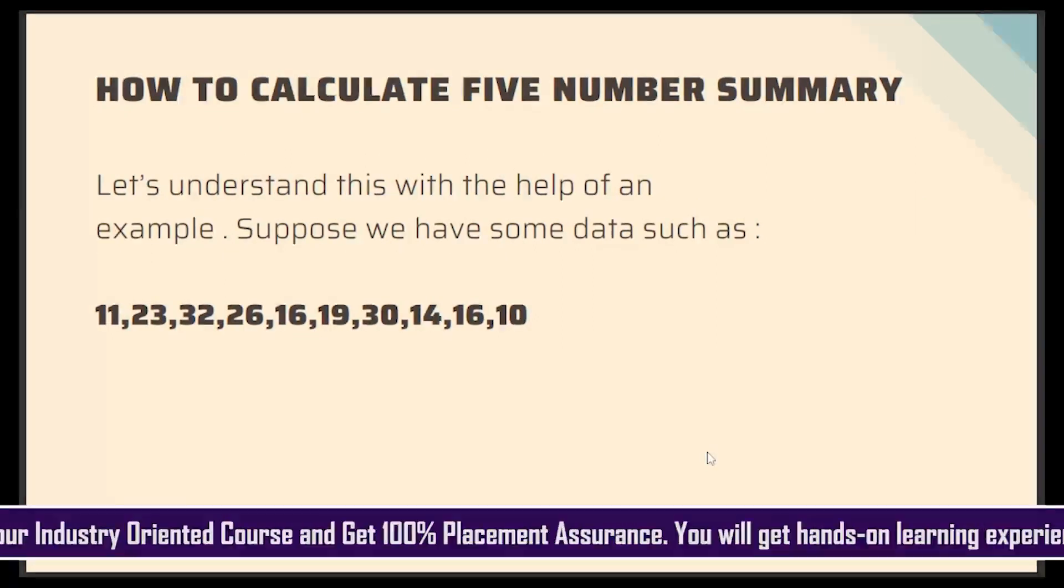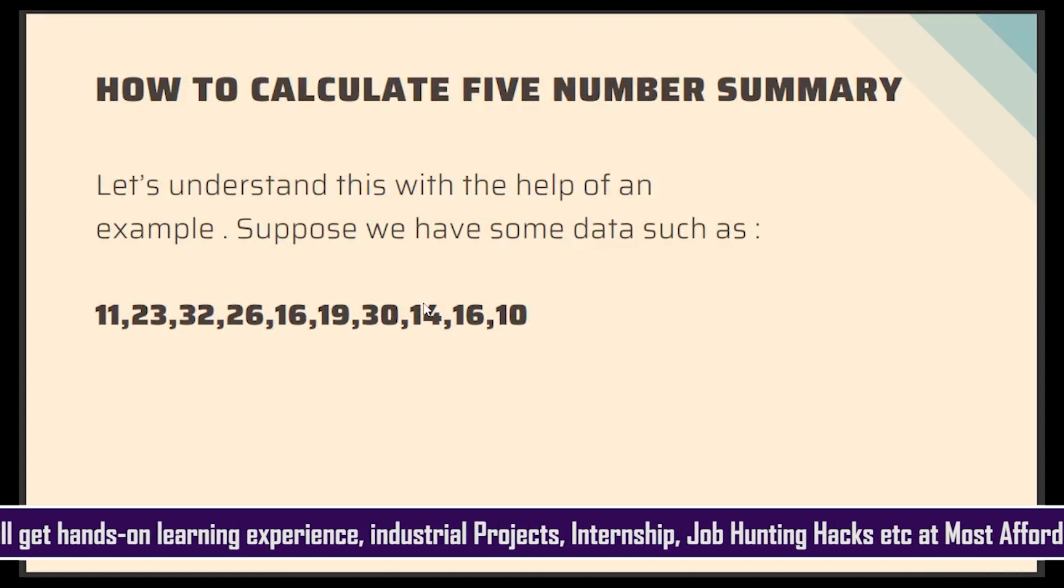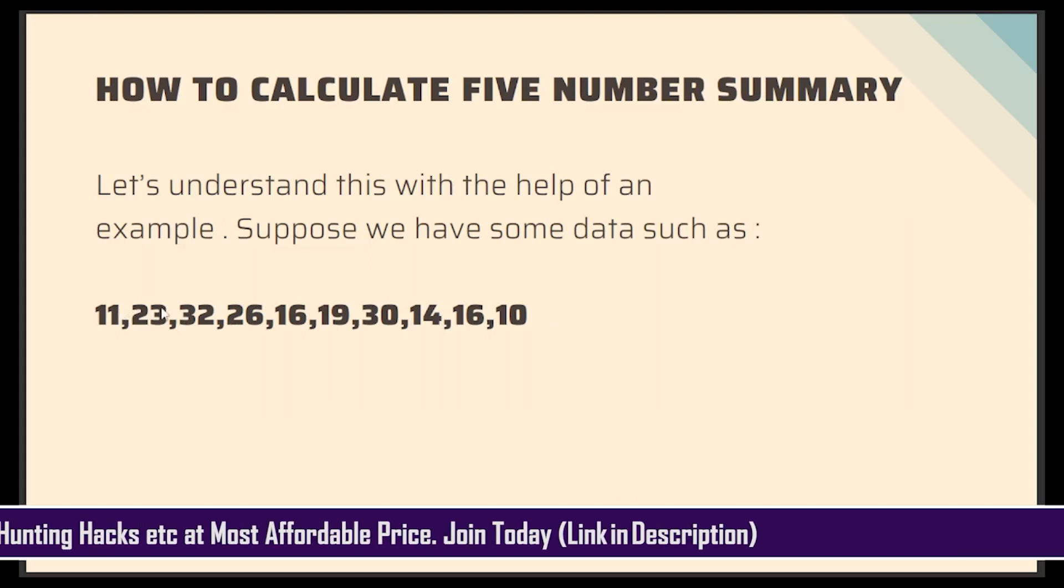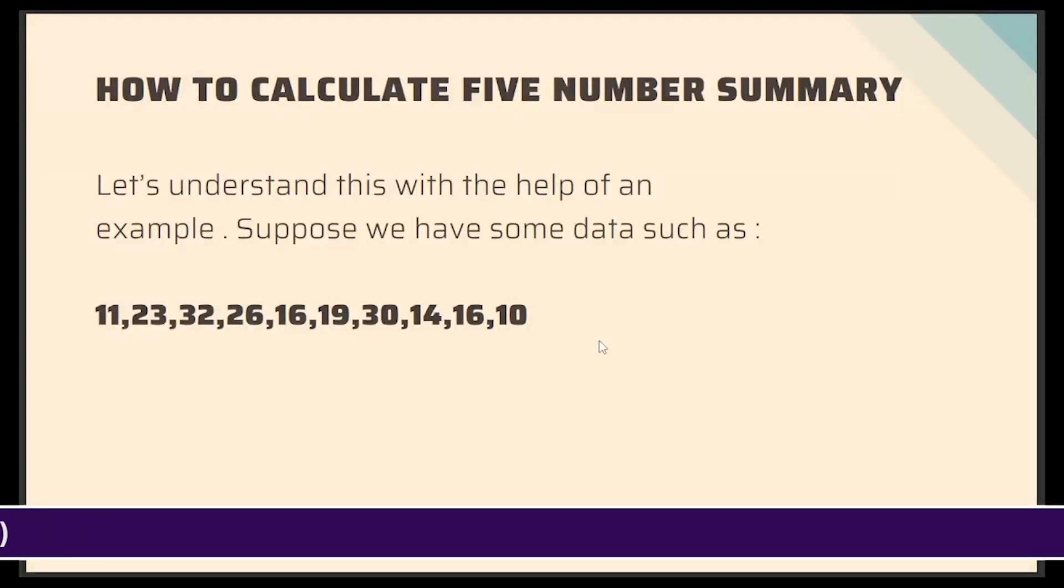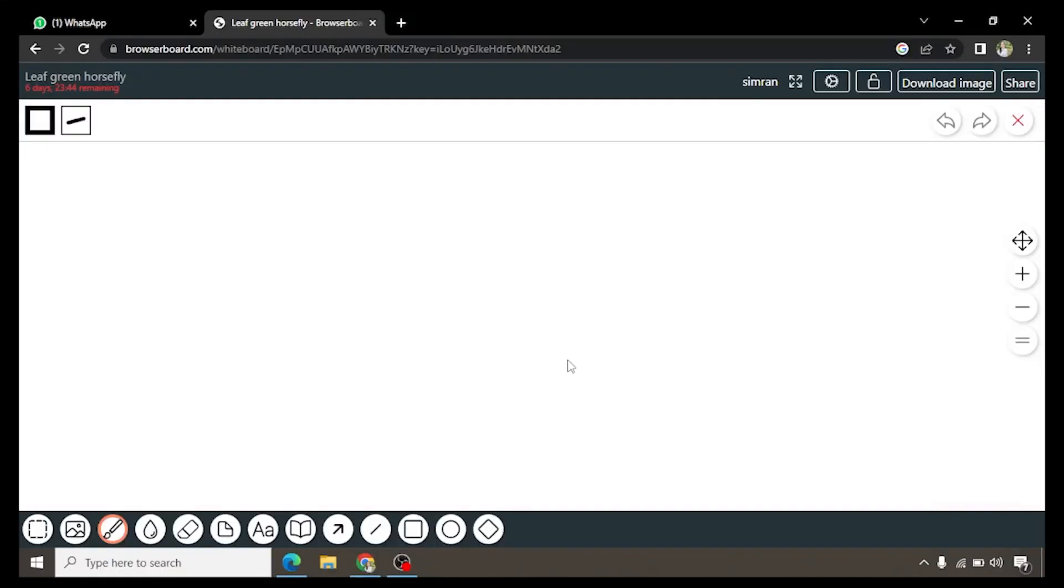And now let us see how we need to calculate five-number summary statistics. This example, we are going to take this example wherein there is a data set like this, certain numbers are given and we will be finding out the values like minimum value, the first quartile, second, third quartile, 50th percentile which is the median and also the maximum value. So for doing that, let us write down these values first so that we can solve it further.